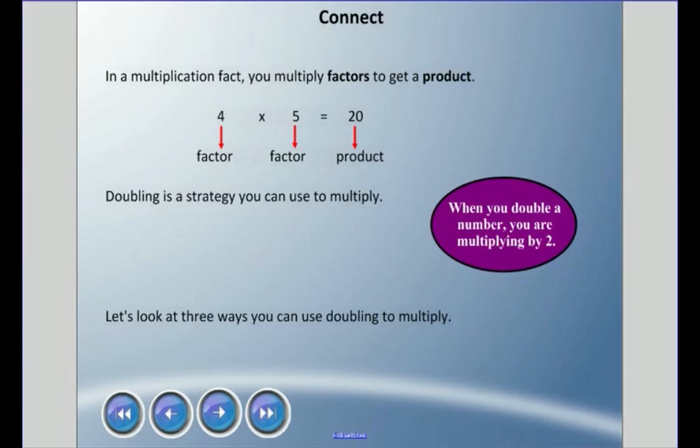The answer when we multiply is called a product. Doubling is a strategy you can use to multiply. When you double a number, you're multiplying it by 2. Like if you want a double cheeseburger, there's two hamburger patties. Doubling means multiplying by 2.